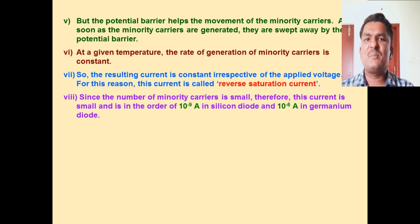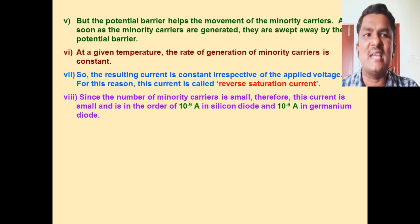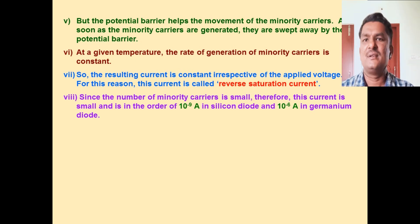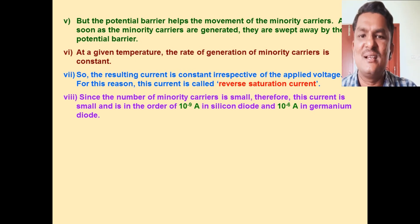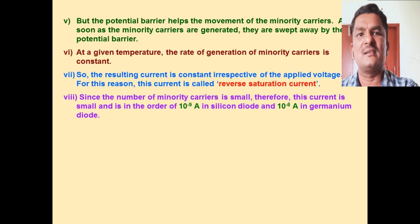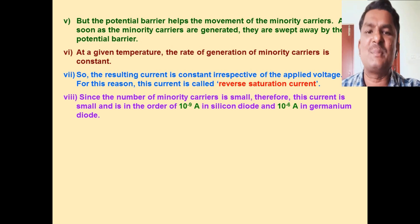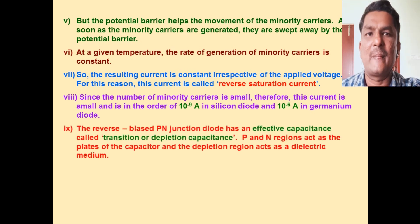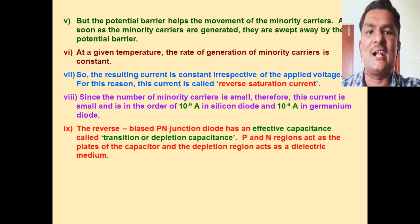The reverse biased p-n junction diode has an effective capacitance called depletion capacitance. The p and n regions act as plates of a capacitor — the concept of capacitor that you learned in the electrostatics chapter — and the depletion region acts as a dielectric medium. This is an important concept.